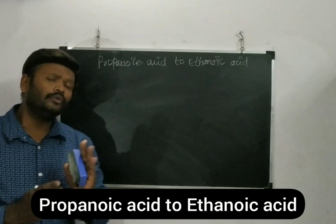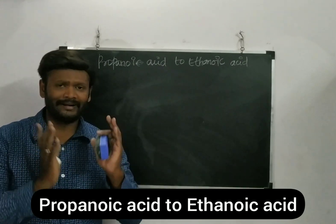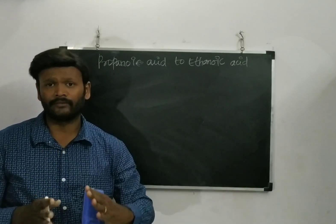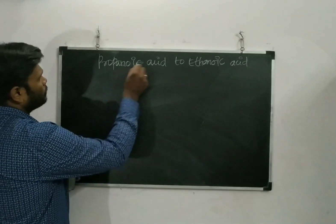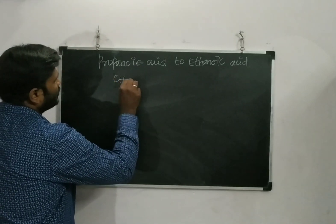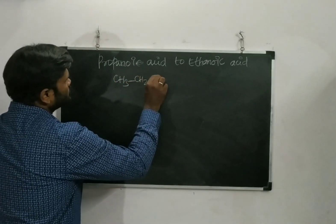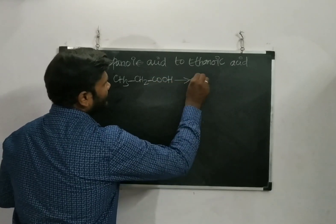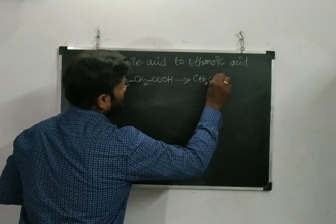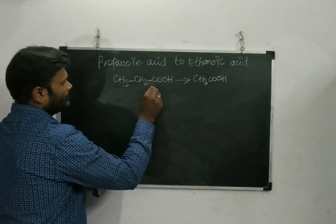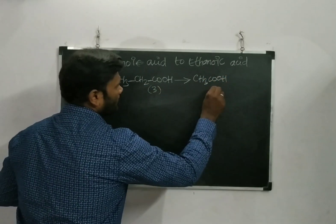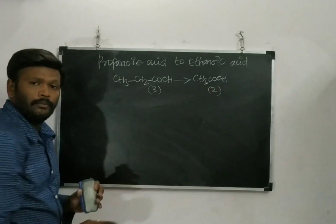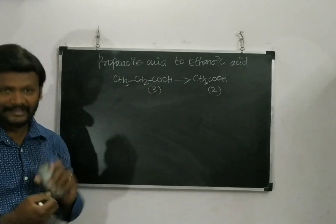Whenever we do the conversion, we have to write the structure first, then understand the difference between the reactant and product. Propanoic acid is CH3, CH2, COOH — three carbon atoms. Ethanoic acid is CH3, COOH — two carbon atoms. So my reactant has three carbon atoms and my product has two carbon atoms; I have to remove one carbon atom from the reactant.